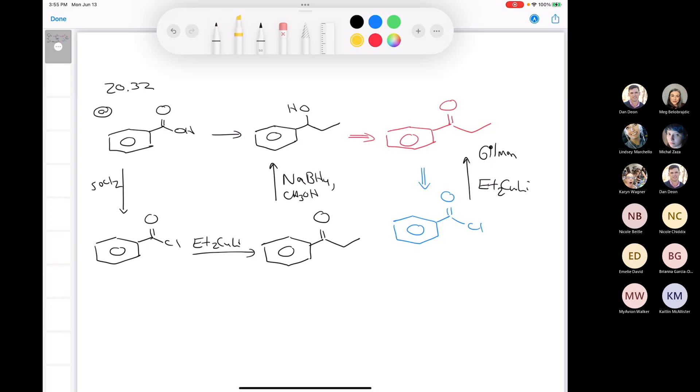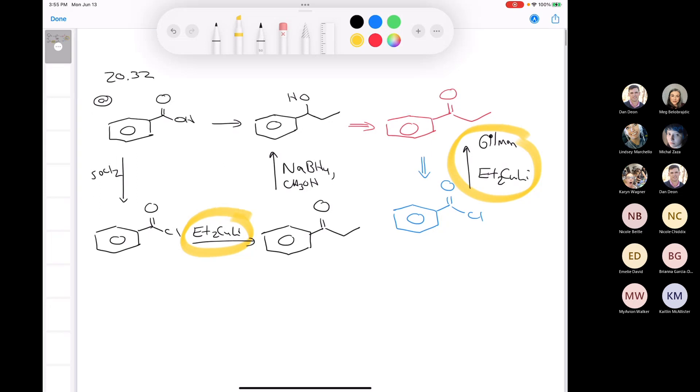And that would give you this secondary alcohol. So, I'd say the real key step in here would be the Gilman reagent. We haven't used it yet in any of the syntheses, so that's probably the best way I can think of to do this synthesis, the easiest way, the shortest route. Are there others? Probably. But this one is very expeditious.